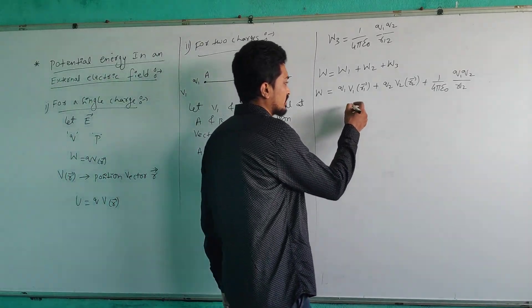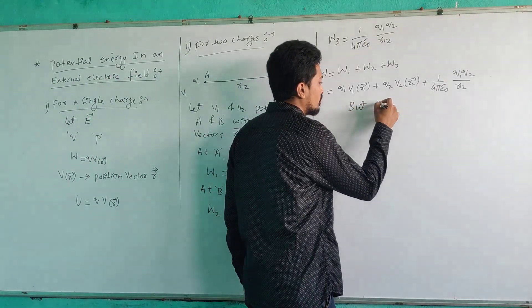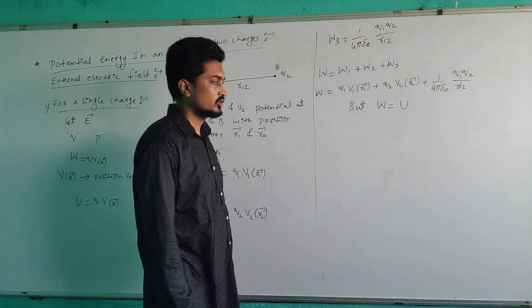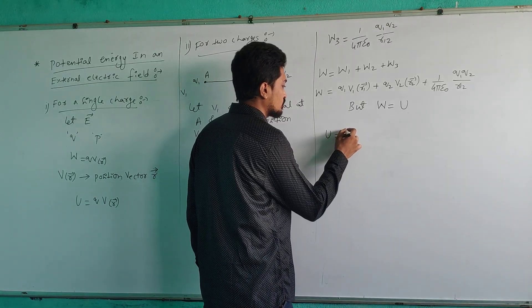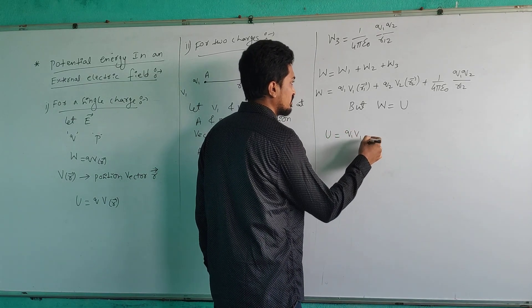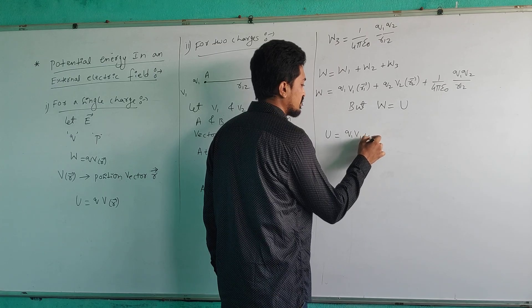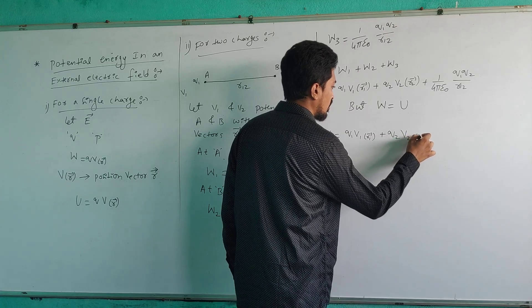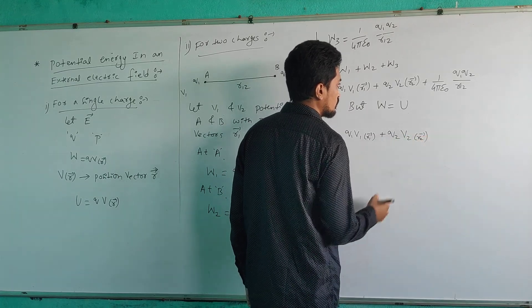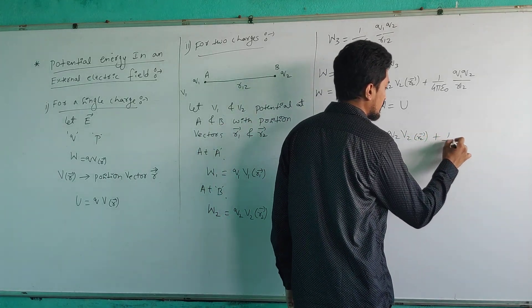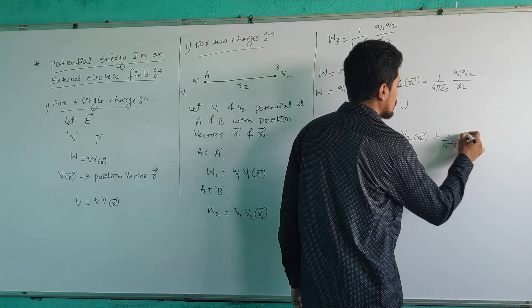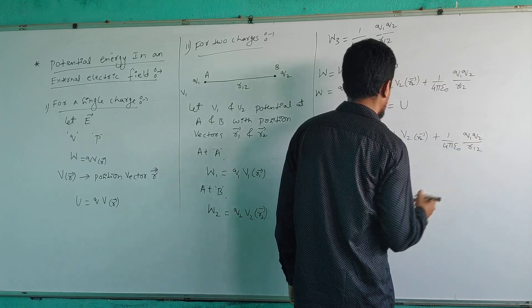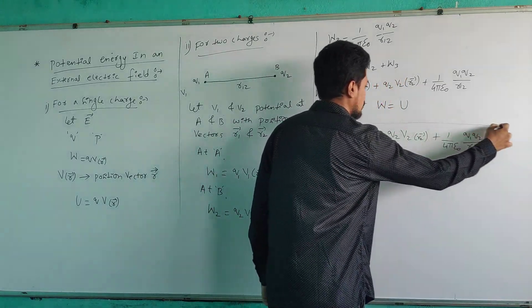This total work done is stored in the form of potential energy, so we replace W with U. Therefore, U is equal to Q1 × V1(R1 vector) plus Q2 × V2(R2 vector) plus (1 / 4πε₀) × (Q1 × Q2) / R12. So this is the total potential energy for two charges in the presence of an external electric field.